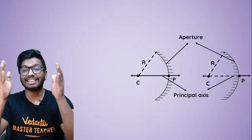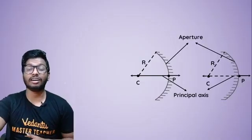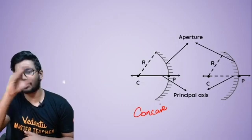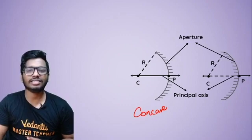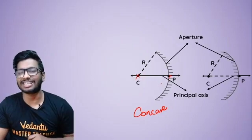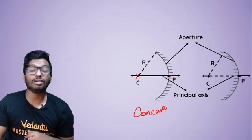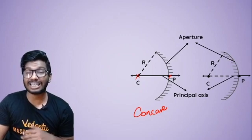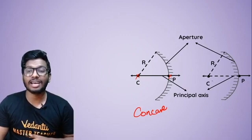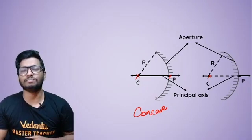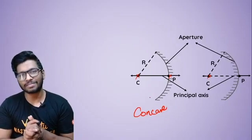All in all, this is what it looks like. For a concave mirror, the reflecting surface is towards the inside. This line is the radius of curvature, this point is the center of curvature, this is the pole, and that straight line passing through it is the principal axis. For a convex mirror, the reflecting surface is towards the outside — the center of curvature lies behind the reflecting surface — and that straight line passing through it is the principal axis.